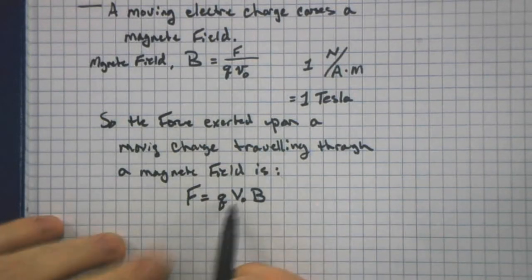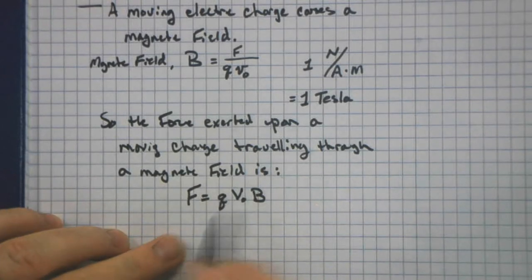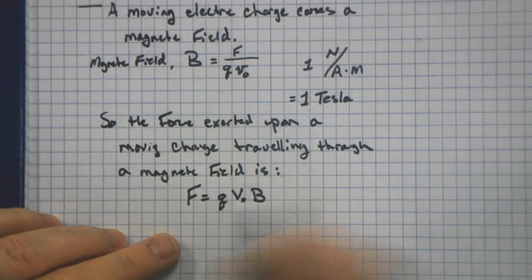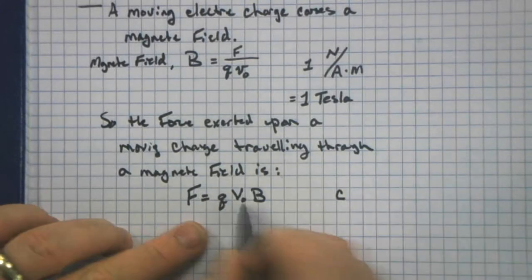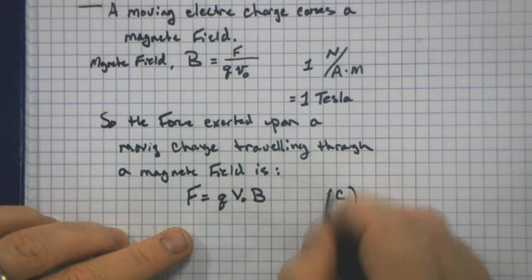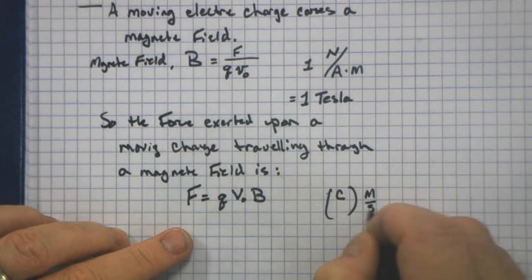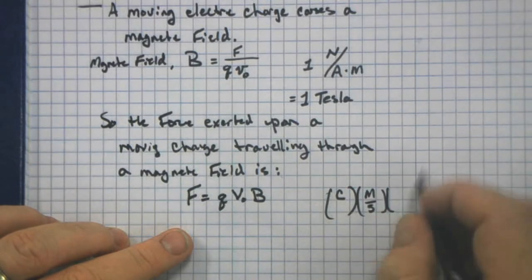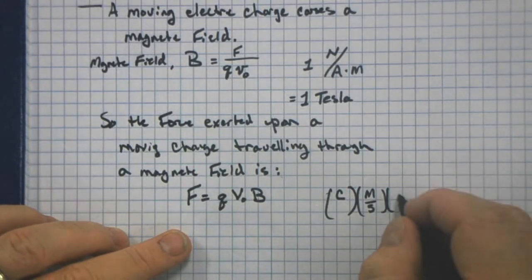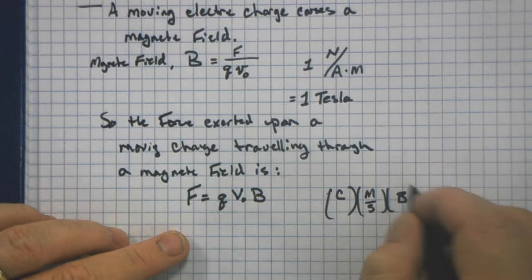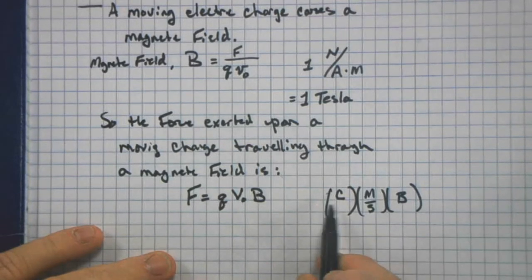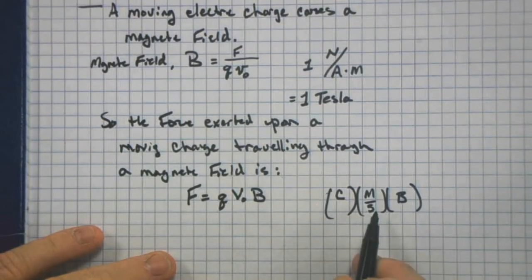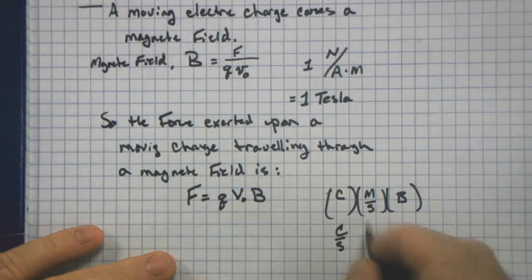Now, there's another version of this. We can rearrange this QV-naught. Because if this Q is coulombs, right? And V-naught is meters per second. And B is our Tesla.